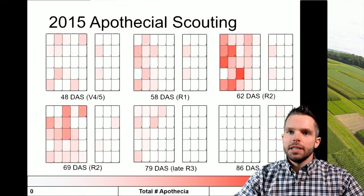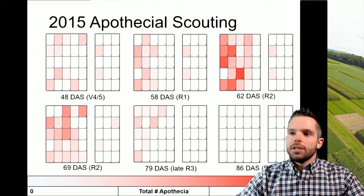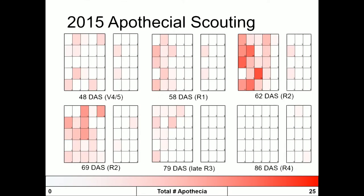Let's look at this in more detail. This is apothecia scouting data from 2015 in some research plots — two separate plots depicted by these grids, with days after seeding along the bottom along with the growth stage of the soybean crop. The intensity of red in each quadrat tells us how many apothecia there were: the brighter the red, the more apothecia; more pink color means fewer apothecia; and white indicates no apothecia.